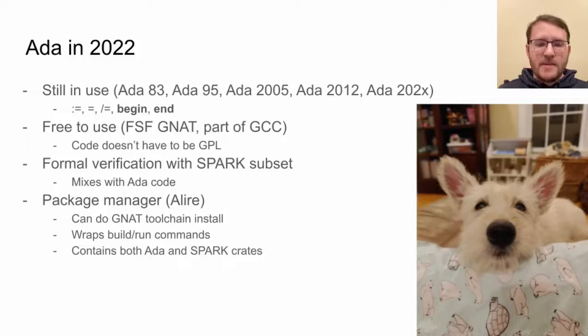ADA contains a subset called Spark, which provides the capability to formally verify subsets of your program enabled via the Spark mode aspect. There's also a relatively new package manager called Alire. This enables you to install the GNAT toolchain on multiple systems, create, publish, and download crates, which can be libraries or binaries. If you're familiar with Rust, this tool fulfills many of the roles of RustUp and Cargo.